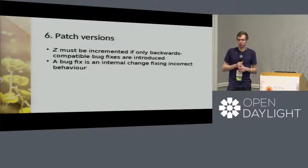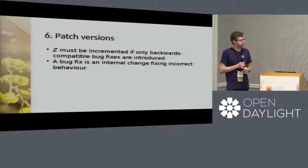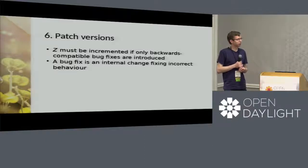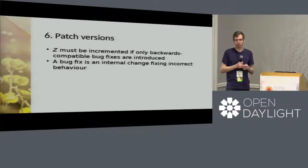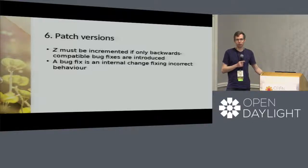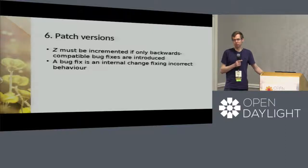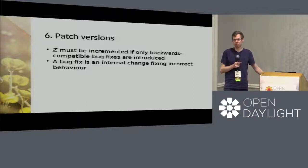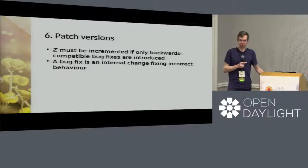What are the rules for incrementing version components? Starting with the patch version: if you make a new release with only backwards-compatible bug fixes, you only increment the last component — going from 1.0.0 to 1.0.1. A bug fix is an internal change fixing incorrect behavior as defined by the public API. If there's a bug that means code doesn't match the documented behavior, you can fix it with a patch increment even if it breaks things, because people should be coding to the documented public API. That would be a big change for Open Daylight, but a good one.